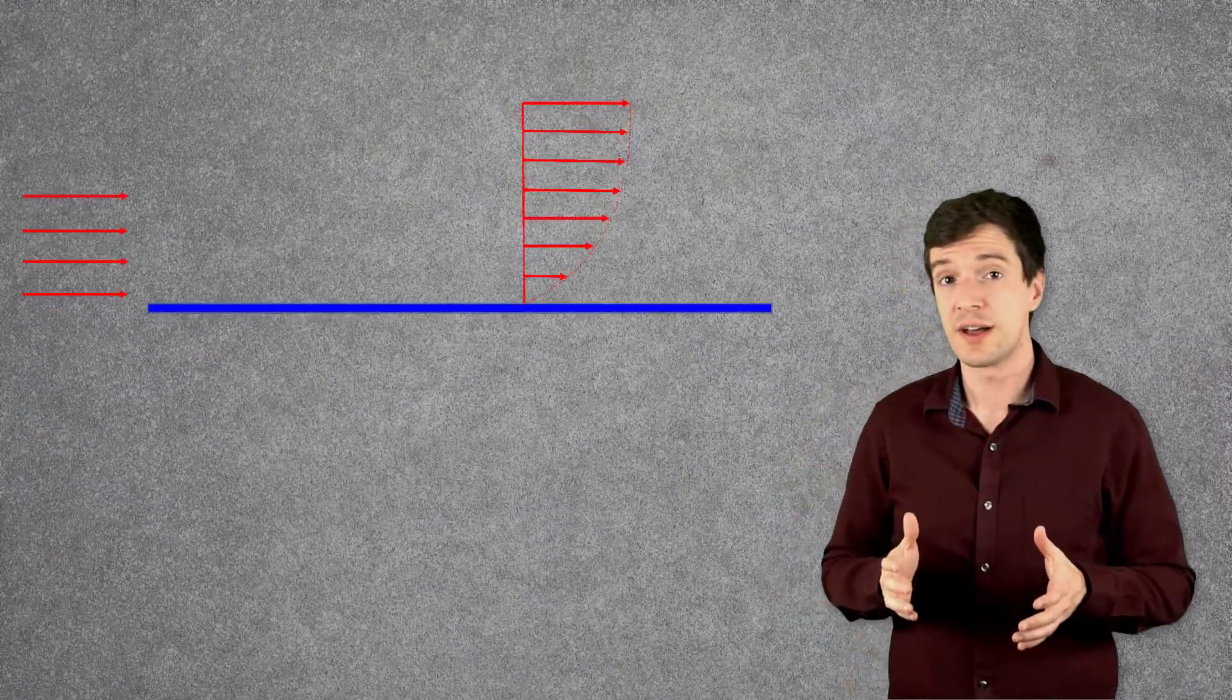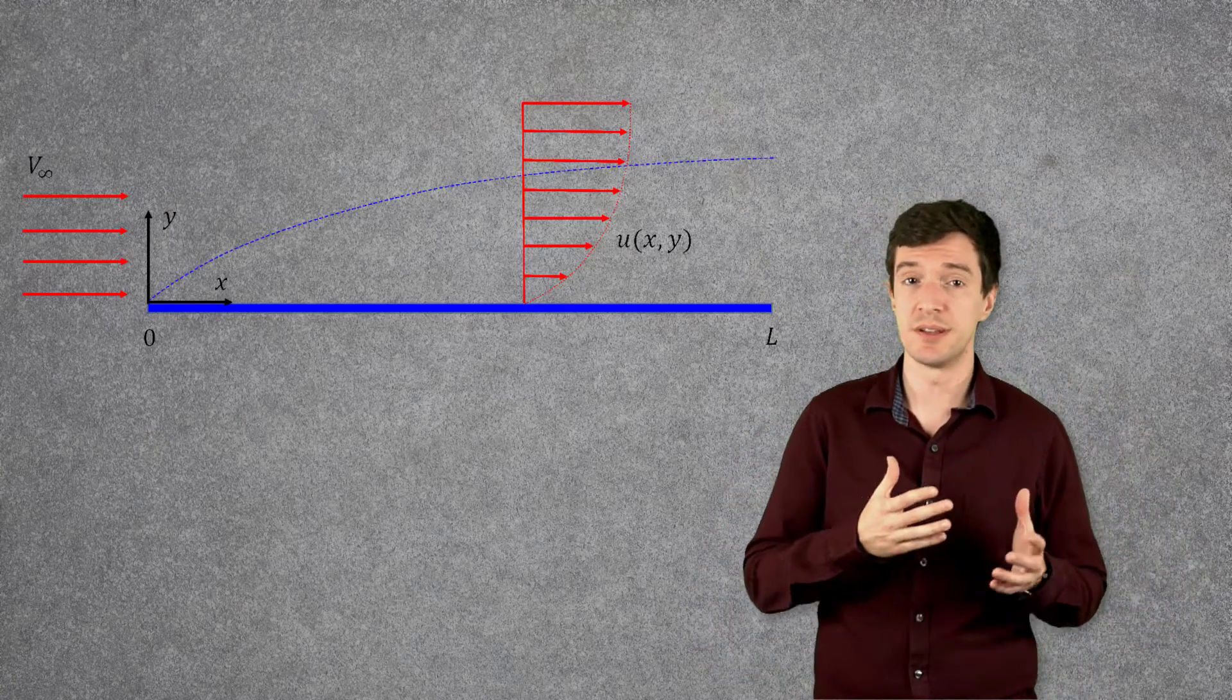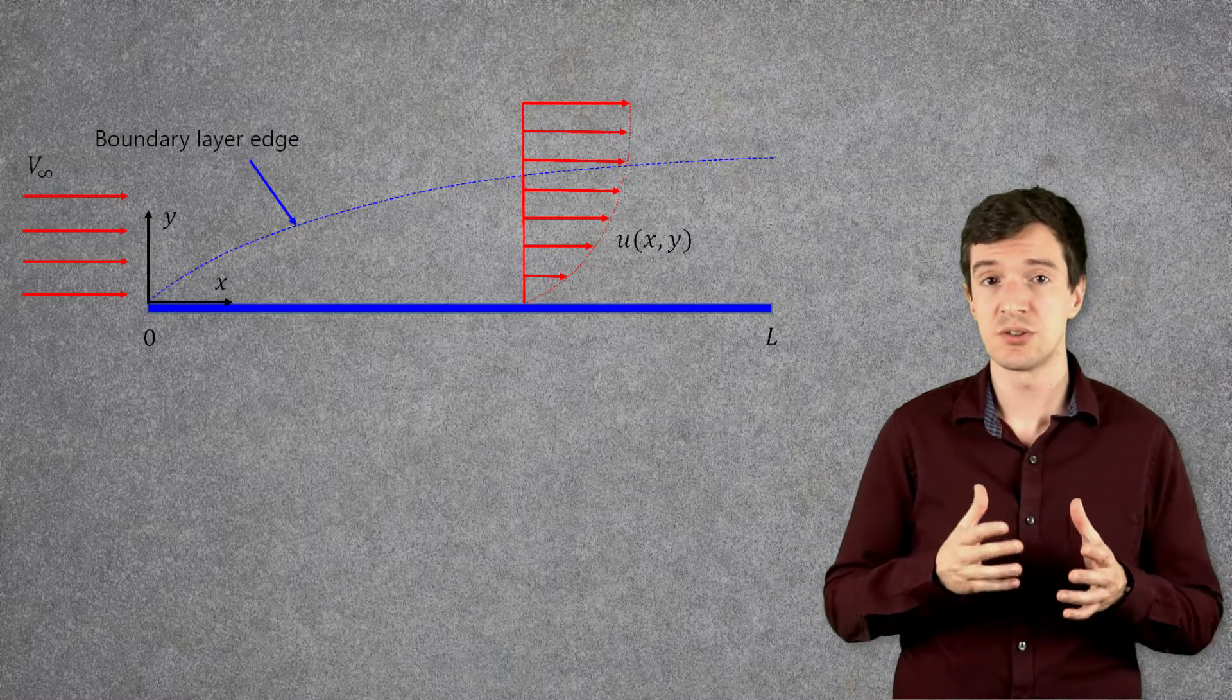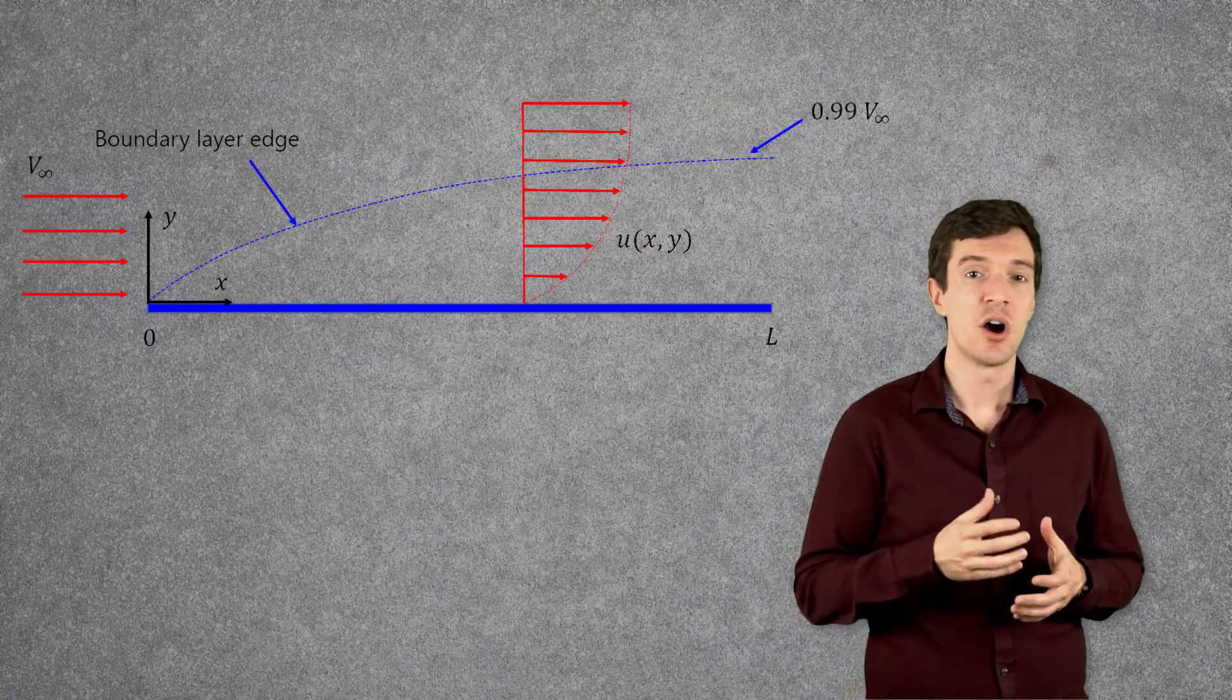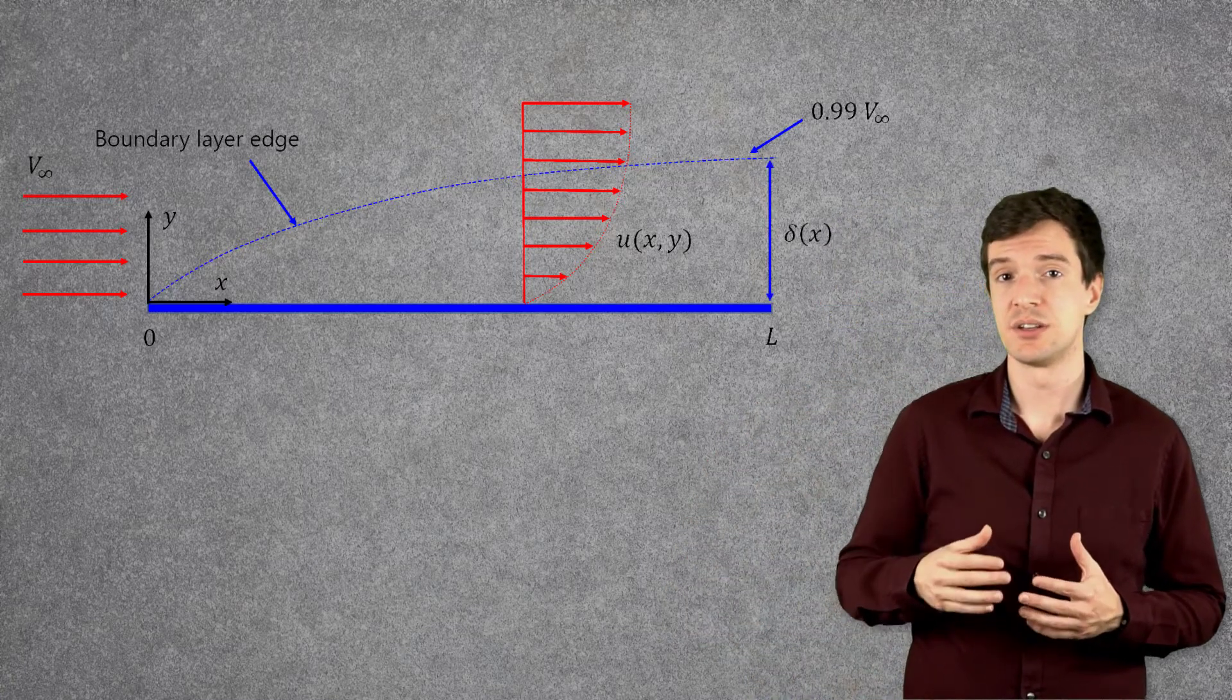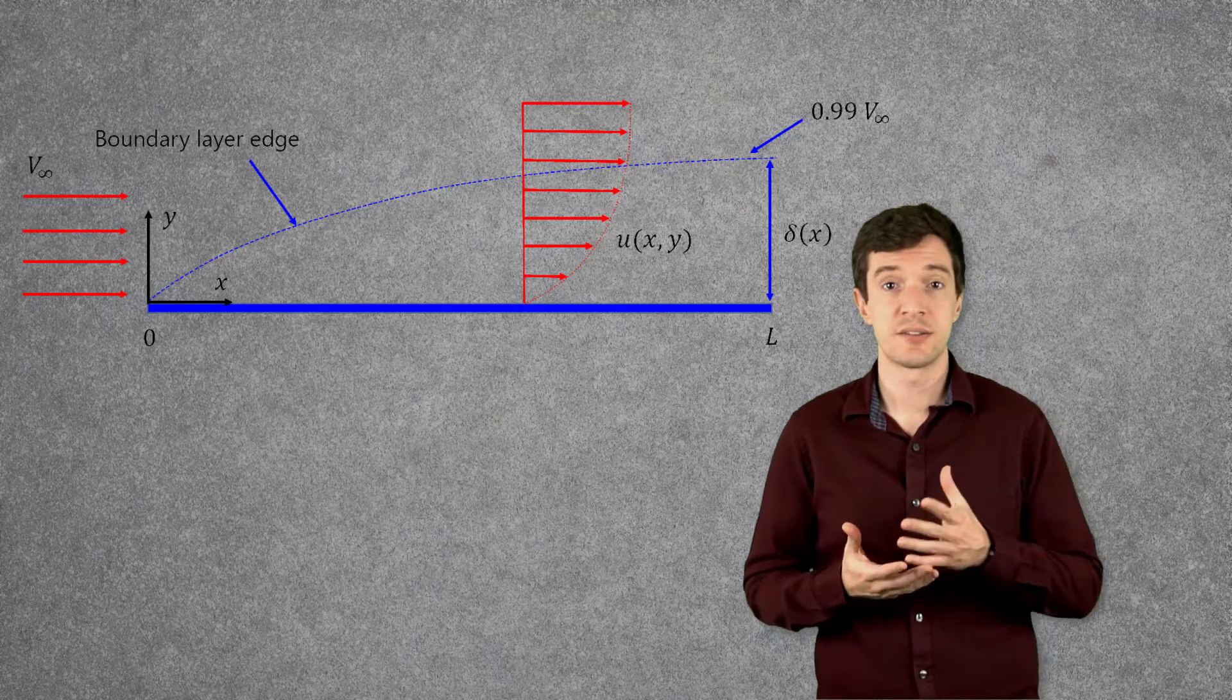We can now define some useful parameters for the description of a boundary layer. As we mentioned before, the boundary layer grows from the leading edge of the plate. Here we can see the boundary layer edge that represents the position where the flow velocity is equal to 99 percent of the free stream velocity. The distance between the plate and the boundary layer edge is defined as the boundary layer thickness and is commonly represented by the Greek letter delta.